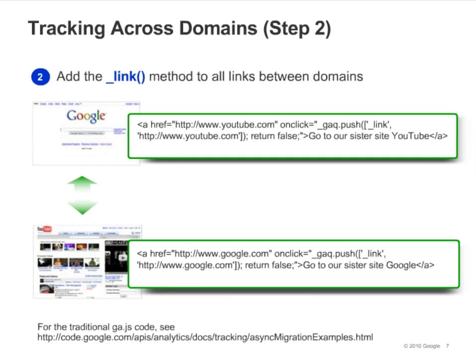The second step involves the link method. Use this method in all links between domains. In this example, we're updating all links from google.com to youtube.com and vice versa. We update each link to call the link method as shown here. When a user clicks on a link that takes them to the other domain, the session information is preserved and the user is identified as being the same visitor across both domains.